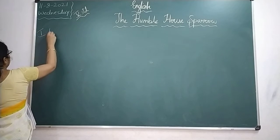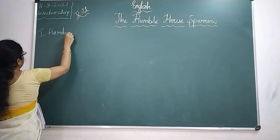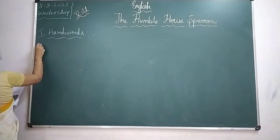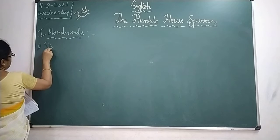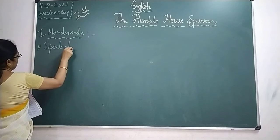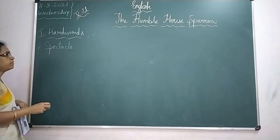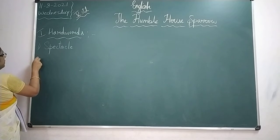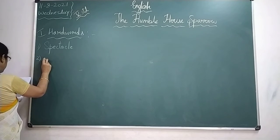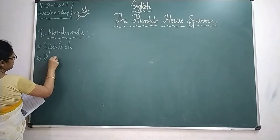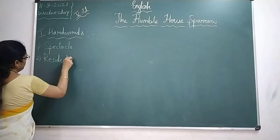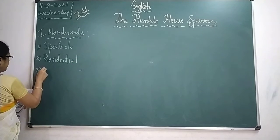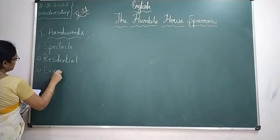The first thing is hard words. The first word is 'spectacular' — S-P-E-C-T-A-C-U-L-A-R. Write the spelling correctly, and the first letter should be in capital. And the second word is 'residential' — R-E-S-I-D-E-N-T-I-A-L. Residential. And the next word is 'eaves' — E-A-V-E-S. Eaves.